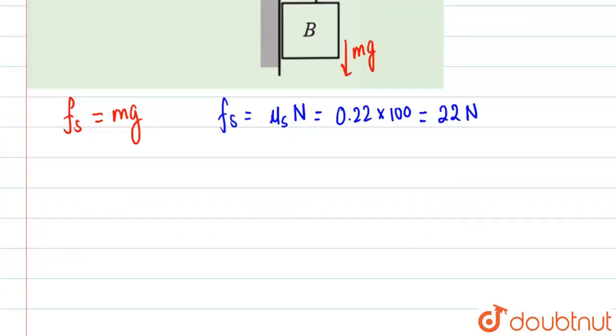So highest value of fs means lowest value of mg must be equal to 22 newtons. Fs max is equal to 22 newtons, hence mg must be greater than or equal to that. So mg must overcome this—mg must be equal to 22, we're taking the ideal case.